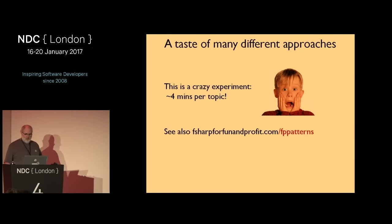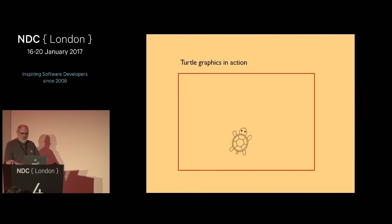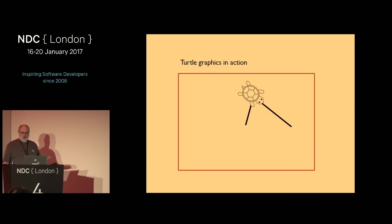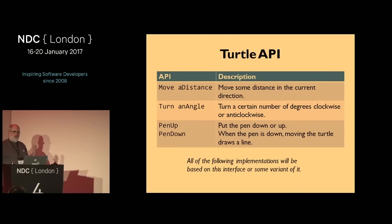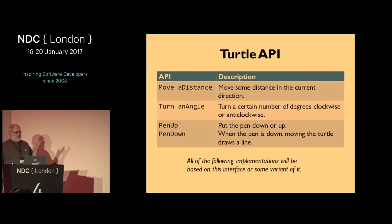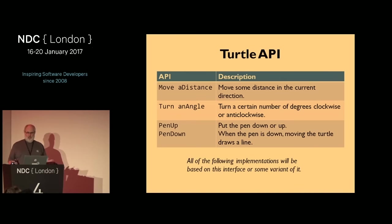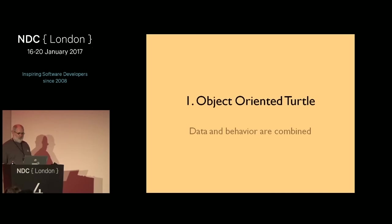Time to get cracking. Turtle graphics — you should be familiar with this. The concept is you have a turtle pointing in a particular direction, it moves around, and as it moves it draws lines. The turtle API I'm going to work with has four operations: move a certain distance in a straight line, turn some angle left or right, put the pen up, put the pen down. If the pen is down it draws; if the pen is up it won't.